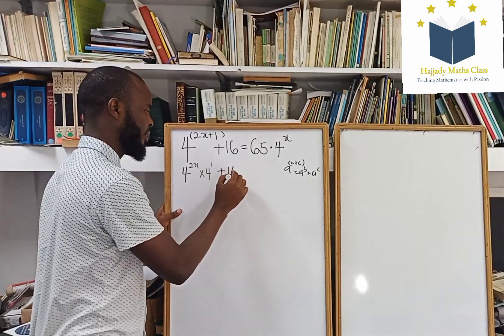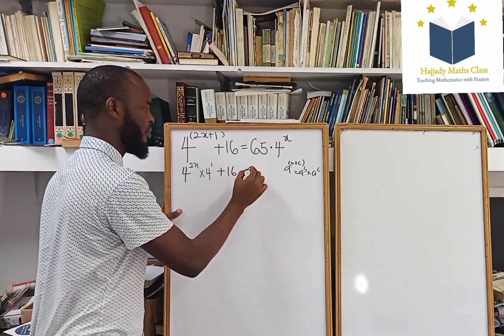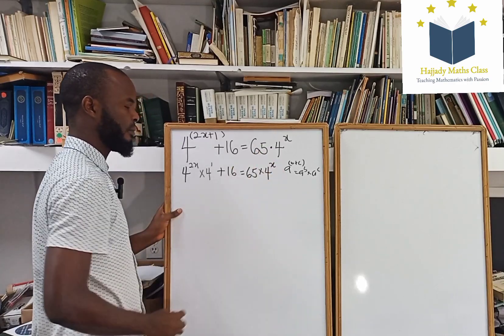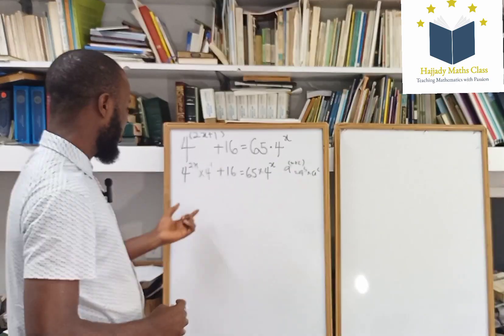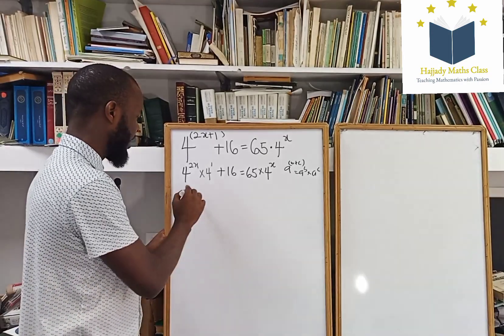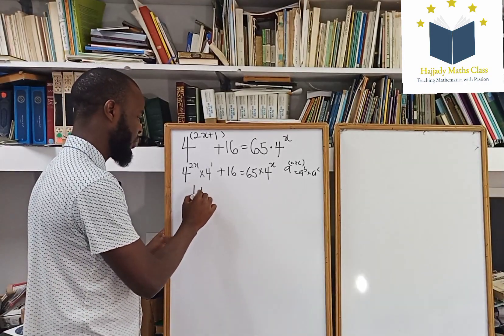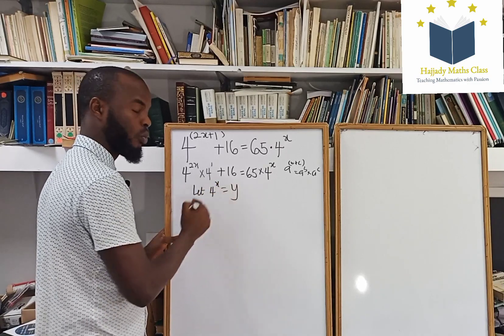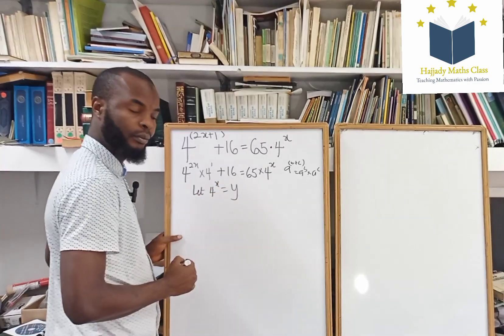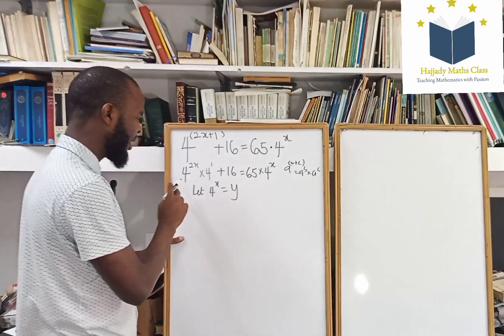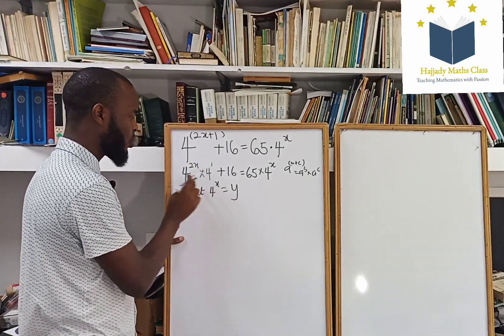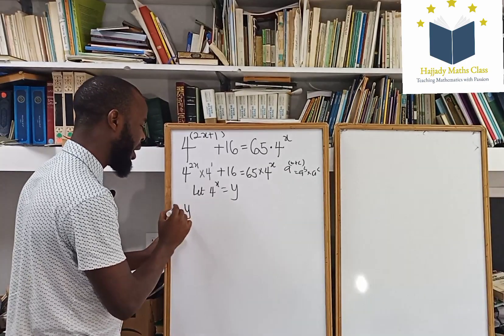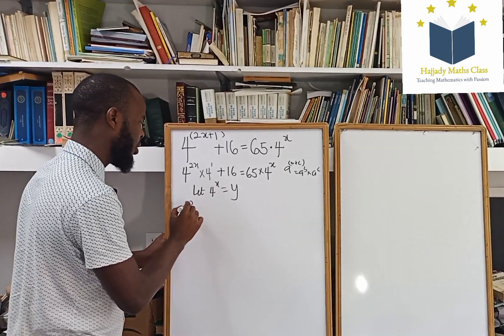Plus 16 equals 65 times 4 to the power of x. So now, let 4 to the power of x be equal to y. Then, plugging in 4 to the power of x equals y into this equation, I'm going to have y to the power of 2.